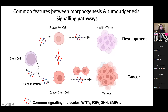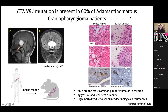Any progenitor cell has the potential to become a cancer stem cell and go on to develop a tumor. One example where a signaling pathway implicated in either process is altered is adamantinomatous craniopharyngioma. In 60 percent of patients with these tumors, there is a mutation in the CTNNB1 gene, which results in an accumulation of abnormal beta-catenin.